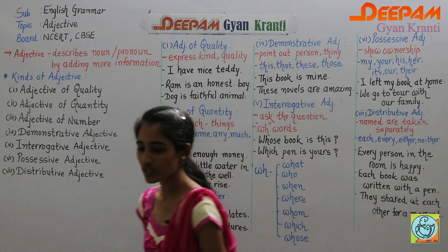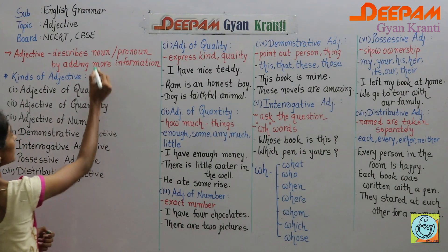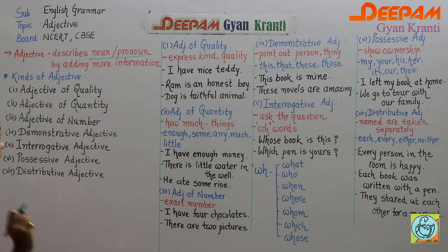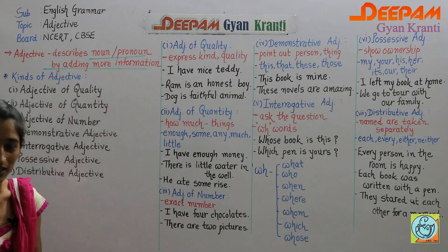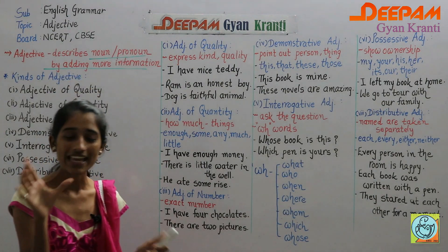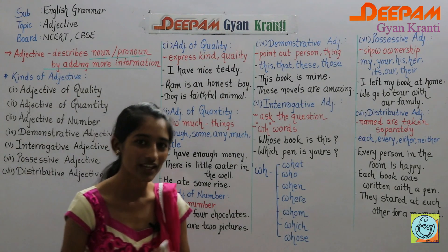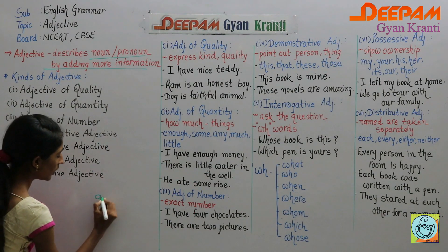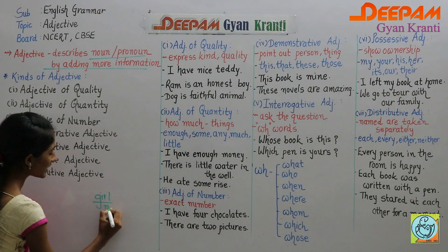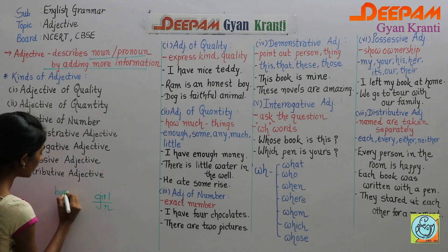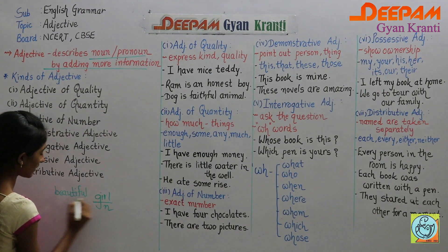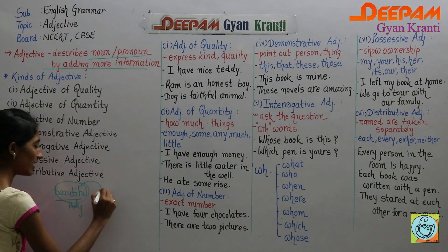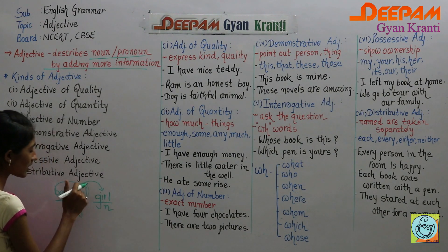So let us start with the definition of adjective. An adjective describes a noun or pronoun by adding more information about them. For example, if I have 'girl' as my noun, but if I say 'beautiful girl,' then 'beautiful' is my adjective — it adds something to the noun 'girl.'